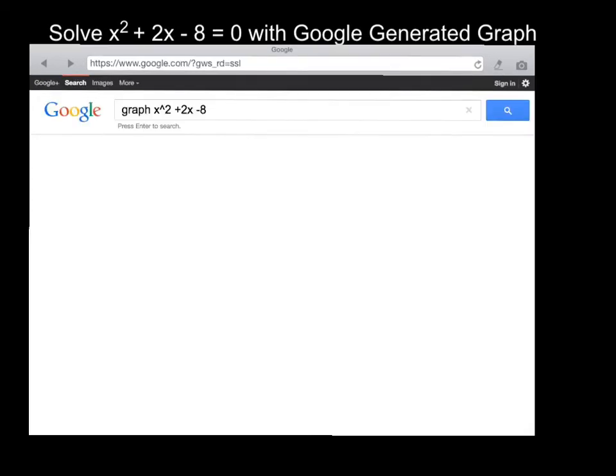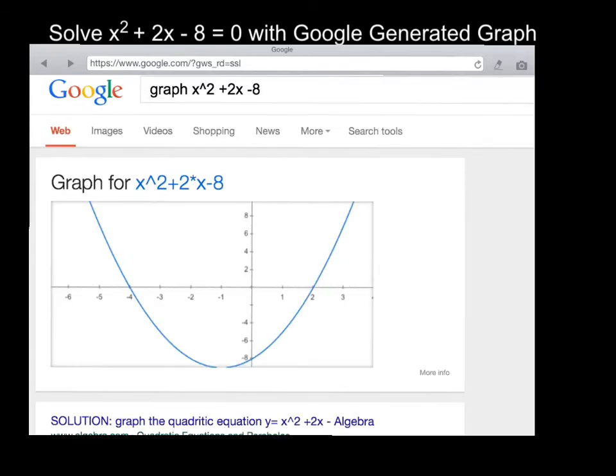I'm going to type in x squared plus 2x minus 8, and I'm going to tell it to graph that, so graph x squared plus 2x minus 8. When I enter that search, you'll see that Google brings up a graph immediately.